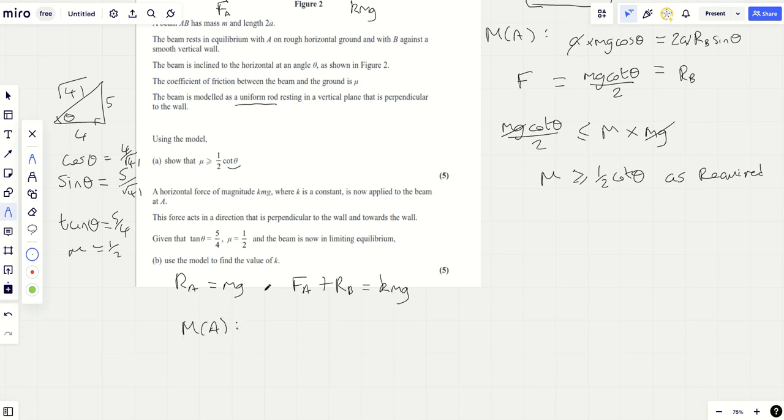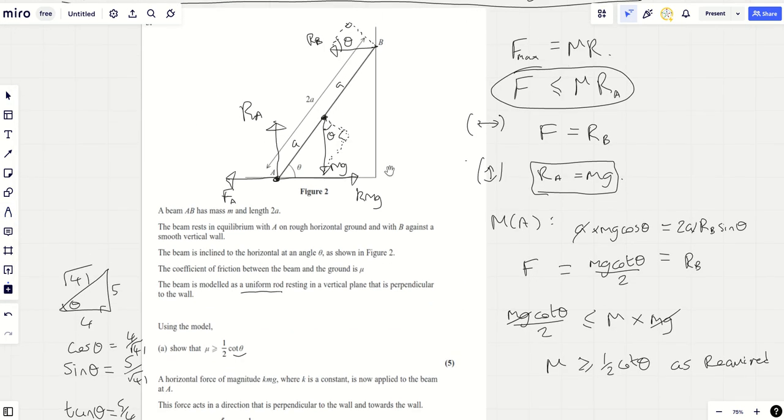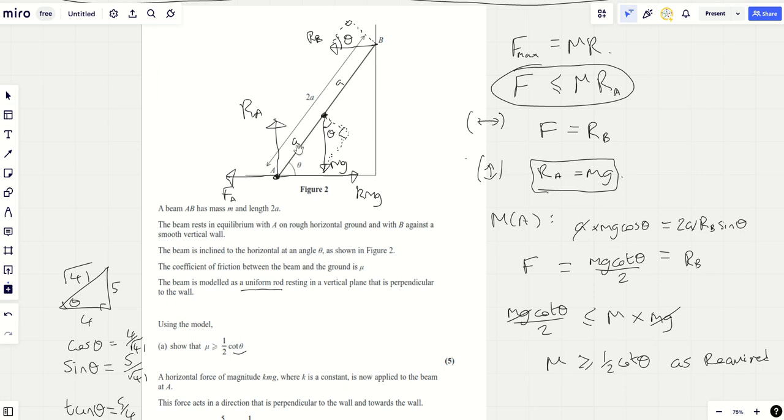And so let's take moments at A again. Now taking moments at A again, we should have exactly the same equation. I think, you know, AMG cos theta equals two A RB sine theta.